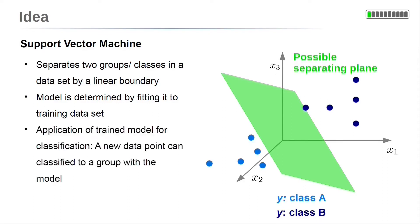Then the boundary can be used to classify new data points with unknown classes. In our example, on the left side of the boundary, any data point is classified as class A, and on the right side as class B.